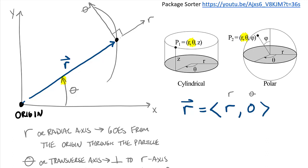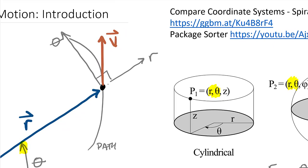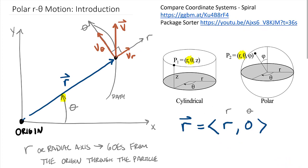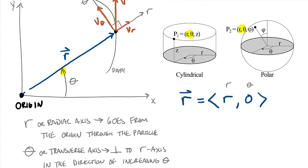Looking at velocity — we can break the overall velocity v into components: one on the r axis, called v_r, and one on the theta axis, called v_theta. Unlike tangent-normal where 100% of the velocity was in the tangent direction, in r-theta we can have components in both r and theta.